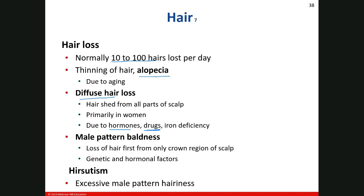A perfect example: people — mainly men — that abuse anabolic steroids will actually see diffuse hair loss even though they gain muscle mass. That's one of the side effects of anabolic steroid abuse. When we see diffuse hair loss, we mainly see it in women. Iron deficiency also plays a role in that.